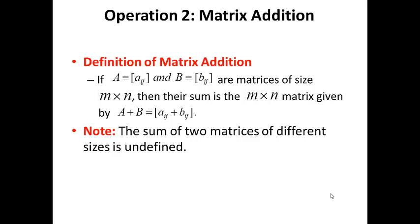Operation 2: matrix addition. Let A equals [Aij] and B equals [Bij] be matrices of the same size M by N. Note that if the sizes are not the same, then matrix addition is not defined. If A and B are matrices of the same size M by N, then their sum is defined and it is an M by N matrix given by A plus B equals [Aij plus Bij], i.e., we simply add the corresponding entries.